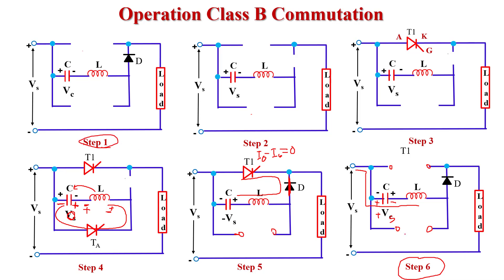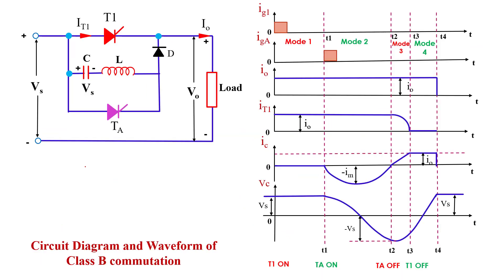Now we draw the waveform of Class B commutation. Here, IG1 is the gate current for thyristor T1, IGA is the gate current for thyristor TA, I0 is the output current, IT1 is the current across the main thyristor T1, IC is the capacitor current, and VC is the capacitor voltage. The whole operation is divided into four modes.